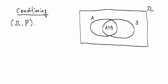Now suppose that we have an observation that A occurred. What does that mean? That means that the outcome of the random experiment omega, we know that it lies in A.